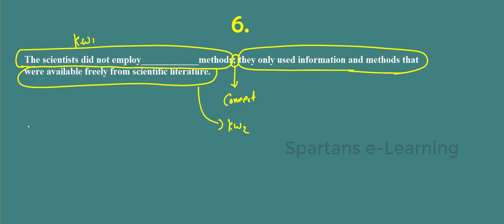You know the meaning of the second keyword. It says they only used information and methods that were available freely from scientific literature — they only used, meaning they are actually narrowing down, restricting something. They are not using anything new. This connector is a supporting connector. The semicolon indicates that whatever is conveyed in the previous clause is extended further by providing examples or information that corroborates it.